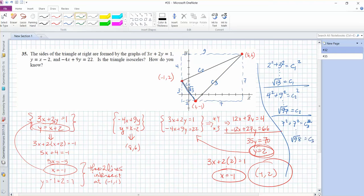So our three side lengths here are, this one's root 97, this one's root 98, and this one is root 13. So even though these last two sides are awfully close, they're not equal. So not an isosceles triangle.